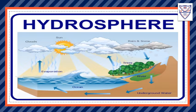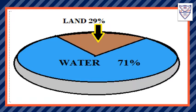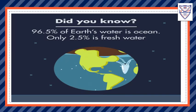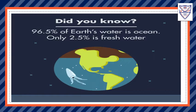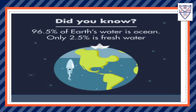Hydrosphere. All the oceans and other bodies of water on earth make up the hydrosphere. The hydrosphere includes the water in the air, such as that in clouds. Water covers 71% of the earth's surface and the remaining 29% is land. This is the reason why the earth is also known as the watery planet.